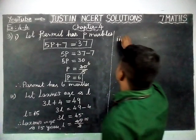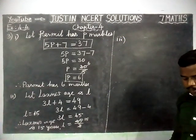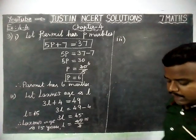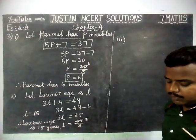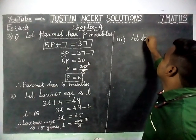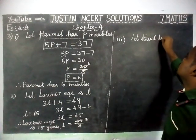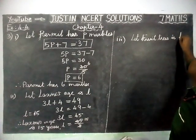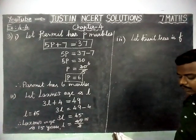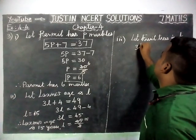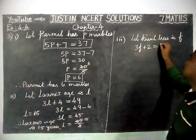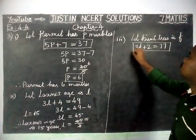Third question: People of Sundargram planted trees in a village garden. Some of the trees were fruit trees. The number of non-fruit trees were two more than three times the number of fruit trees. We are going to take: let fruit trees = F. The condition is: non-fruit trees are two more than three times the number of fruit trees, so 3F + 2 = 77. The number of non-fruit trees is equal to 77.